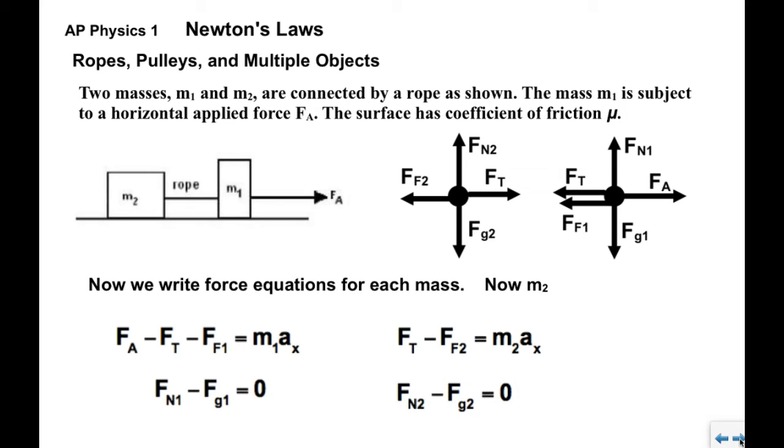When we look at M2, now Ft is in the positive direction, Ff2 is in the negative direction. Again, positive minus negative equals M2a. Up and down for M2, just like M1, doesn't accelerate: Fn2 minus Fg2 equals zero.